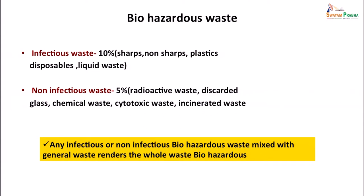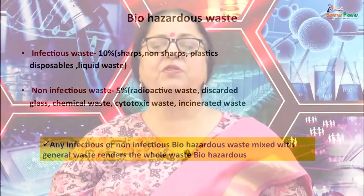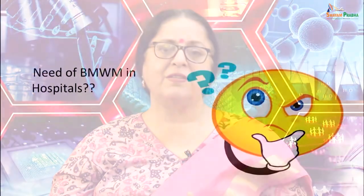Now what is biohazardous waste? It will mainly have infectious waste — 10 percent which is sharps, non-sharps, plastic disposals, liquid waste — and non-infectious waste which is around 5 percent: radioactive waste, discarded glass, chemical waste, cytotoxic waste and incinerated waste. You have to realize that any infectious or non-infectious biohazardous waste if it is mixed with general waste will render the whole waste as infectious. So even if the percentage is 10 to 15 percent, if it is not segregated it will render the whole waste as infectious.